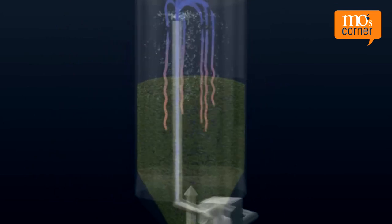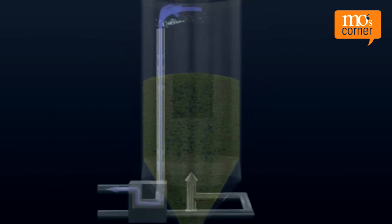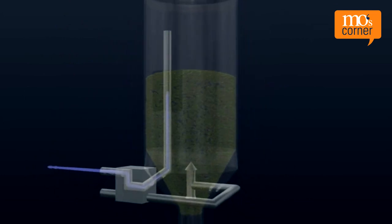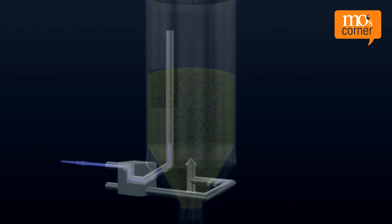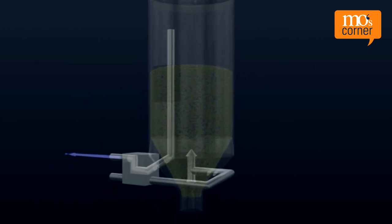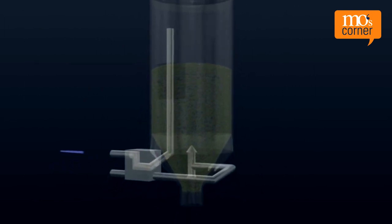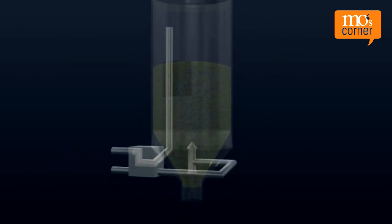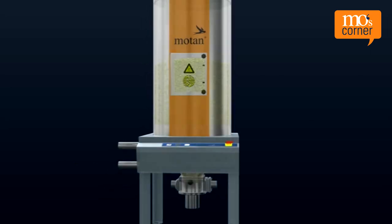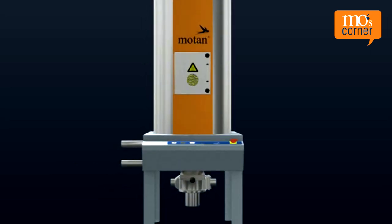If the material throughput is less, the material will stay in the drying bin longer. However, if it's dried for longer, there's a risk that it could overdry. The material is then too dry for further processing or could be damaged.